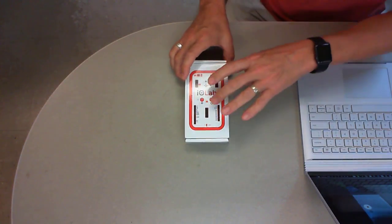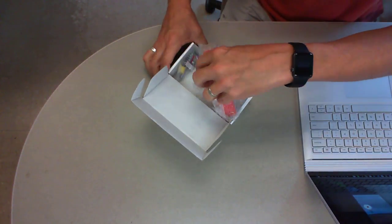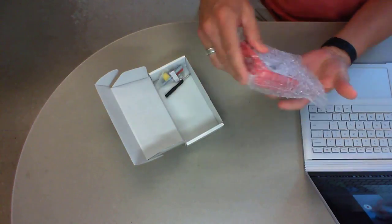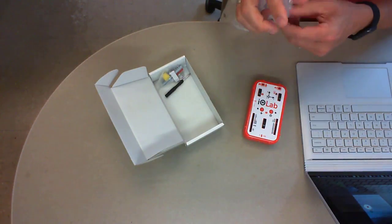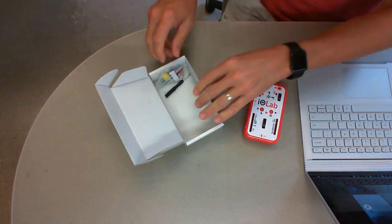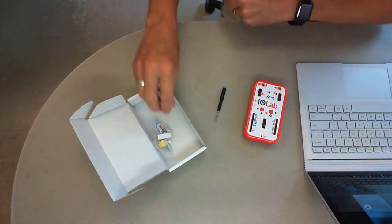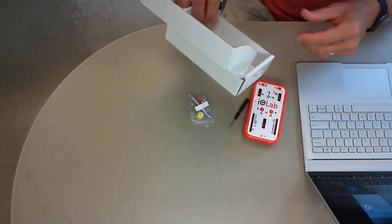All right, let's open up the box. Here we have the device itself, a little bubble wrap, a screwdriver, and we have some accessories.